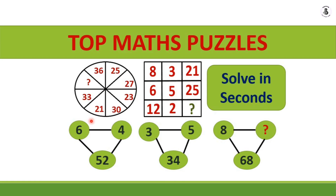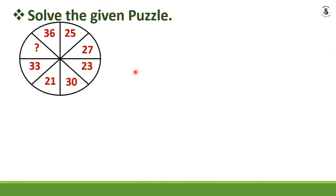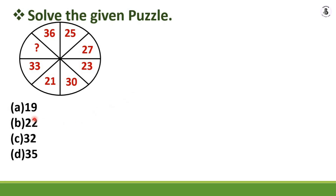Welcome to my YouTube channel. Today I will solve some top problems based on math puzzles. For problem number one, a circle puzzle is given with values 36, 25, 27, 23, 30, 21, and 33. You should find the next number in the series to complete this circle. The options are: A) 19, B) 22, C) 32, D) 35. I will give 10 seconds to solve the problem.